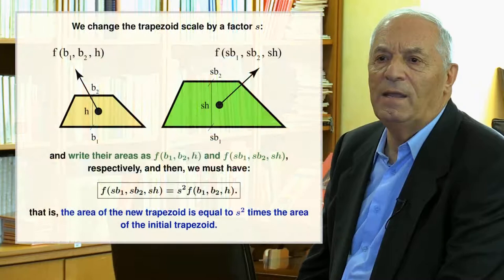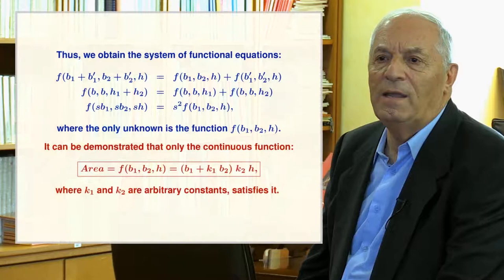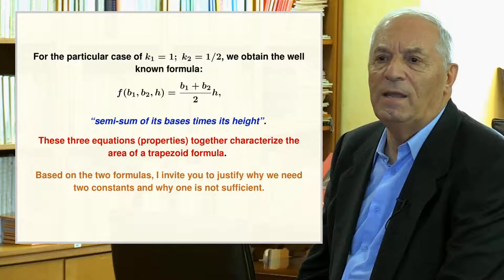Finally, we change the trapezoid scale by a factor s, write the areas of the two trapezoids in terms of f and their bases and heights, and express that the area of the new trapezoid equals s squared times the area of the initial trapezoid. With this, we obtain a system of three functional equations with a single unknown function f. It can be demonstrated that the only continuous solution is f of v1, v2, h equal to k1 times h times the quantity k2 times v1 plus the quantity 1 minus k2 times v2, where k1 and k2 are arbitrary constants. For k1 equal to 1 and k2 equal to one-half, we obtain the well-known formula. Based on the two formulas, I invite you to justify why we need two constants.